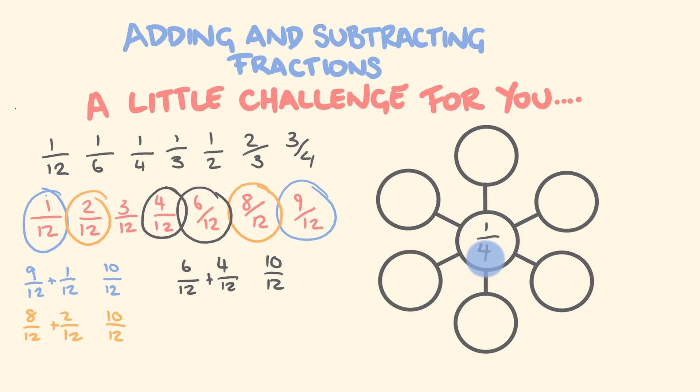All right, so on either end, what do we have? We have 9 over 12 and 1 over 12. You can see here that 1 over 12 is the 1 twelfth, and the one that is equivalent to 9 over 12 is 3 quarters.